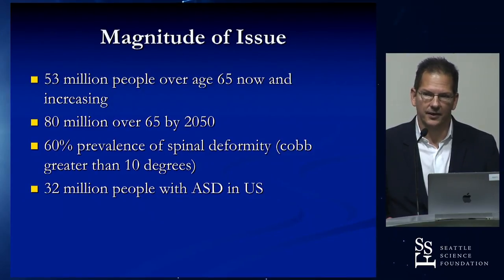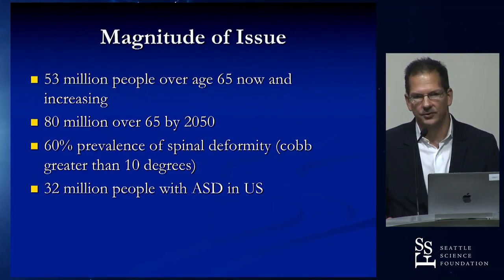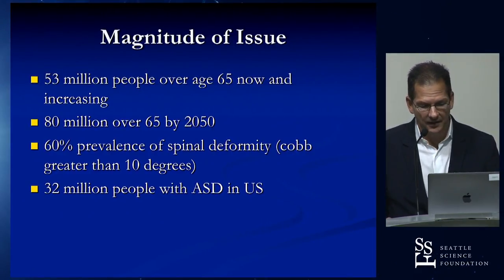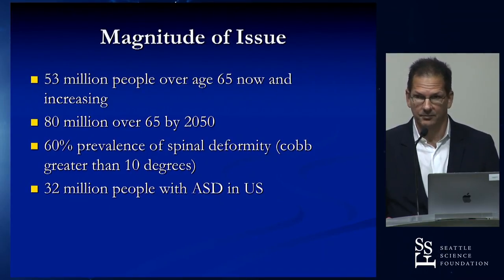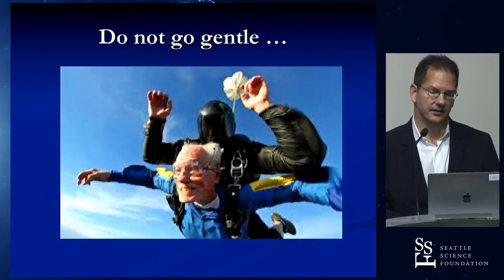Whether or not you're aggressive about surgery on these patients, you're going to be called upon to evaluate them in the clinic setting, because there's about a 60% prevalence of curves over 10 degrees. That means right now we have 32 million people in the U.S. with adult spinal deformity. So it's not a small public health issue.